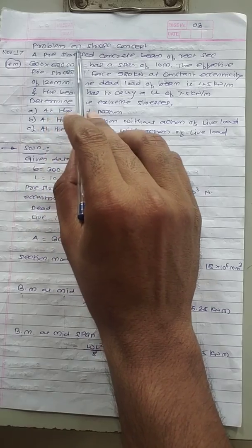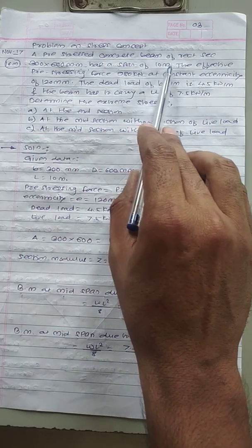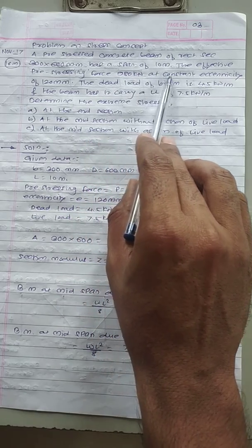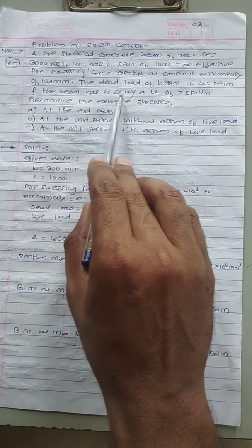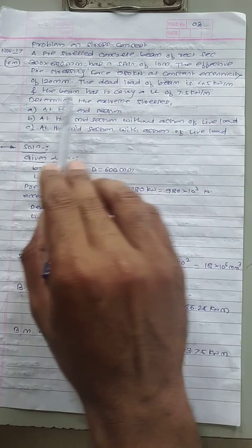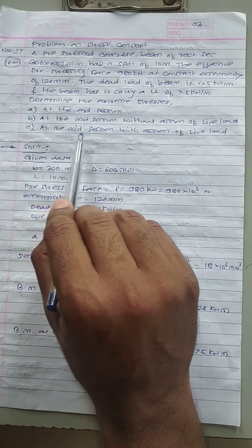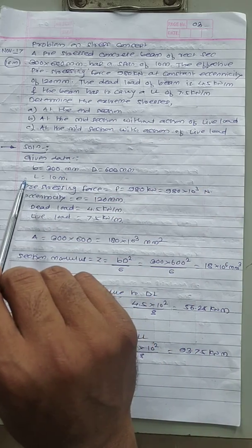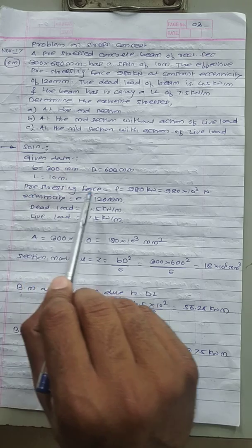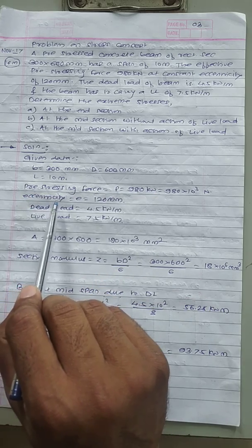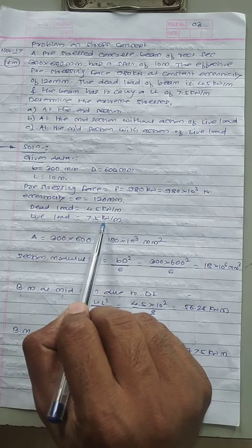Let us solve a problem on the stress concept. A pre-stressed concrete beam of rectangular section 300 mm × 600 mm has a span of 10 m. The effective pre-stressing force is 980 kN at a constant eccentricity of 120 mm. The dead load is 4.5 kN/m and the live load is 7.5 kN/m. Determine the extreme stresses: (1) at the end section, (2) at the midsection without live load, and (3) at the midsection with live load. Given: B = 300 mm, D = 600 mm, span = 10 m, P = 980 kN, E = 120 mm, DL = 4.5 kN/m, LL = 7.5 kN/m.